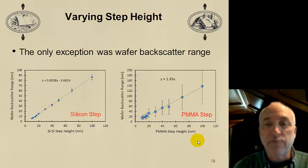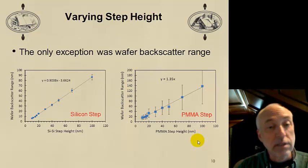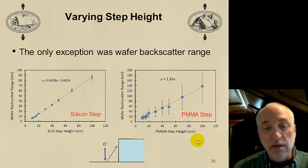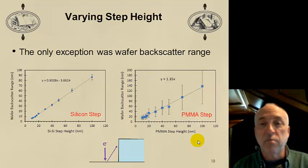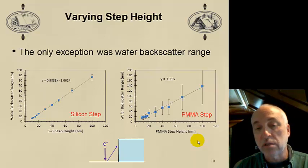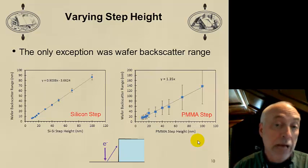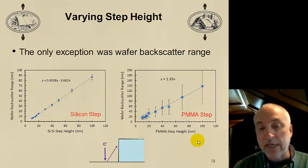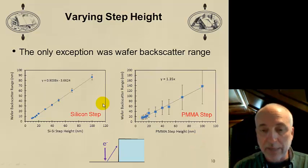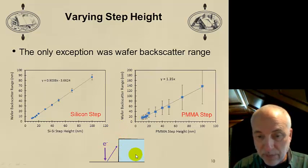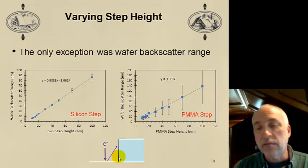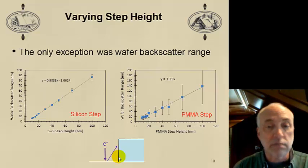One exception was the wafer backscatter range parameter. We found that was linear with the step height, both for the silicon step and the PMMA step. We can understand that when we think about one of the mechanisms of backscatter range - that is, how close to the step can the electrons go before the step starts to influence it. That depends on how tall the step is. If secondary electrons being injected from the silicon wafer surface are being absorbed by that step, you can only imagine that a taller step will absorb more of them, and a shorter step will absorb less. So this wafer backscatter range will be linearly dependent upon that step height for purely geometrical reasons, shadowing effect, and that's what we observe.